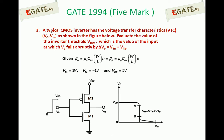A CMOS inverter consists of two transistors: one NMOS and one PMOS. We need to evaluate the inverter threshold — the value of the input at which V0 falls abruptly by delta V0, which equals VTN plus VTP. The given information: βN equals βP, VTN is 1V, VTP is minus 1V, and VDD is 5V.